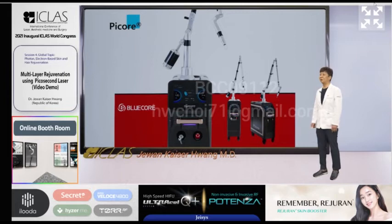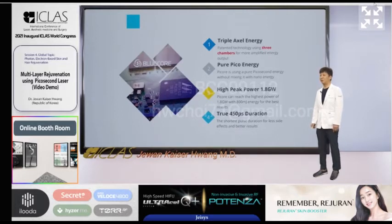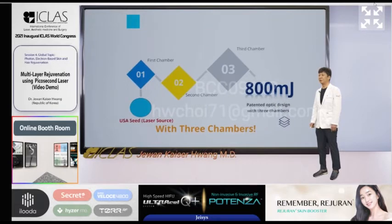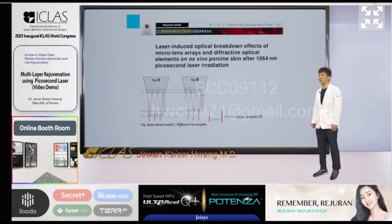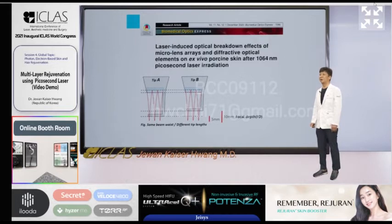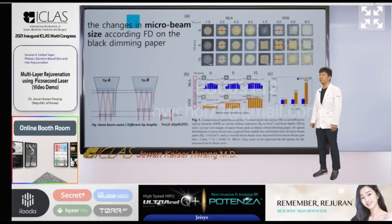I will now describe the characteristics of the picosecond laser I am presenting today. The most important feature is that it is composed of three chambers. The beam oscillated from the seed laser goes through three chambers and is stably amplified with high energy. This is the paper I published after the experiment with PICO. In the experiment, we tested different focal depths to change the power density. From the results, it can be seen that the DOE becomes closer to a bulk beam as focal depth increases.